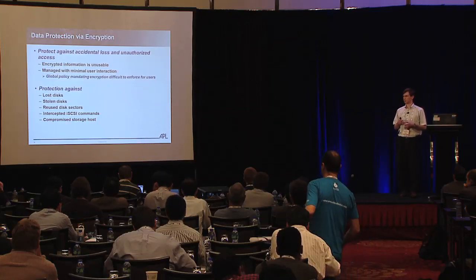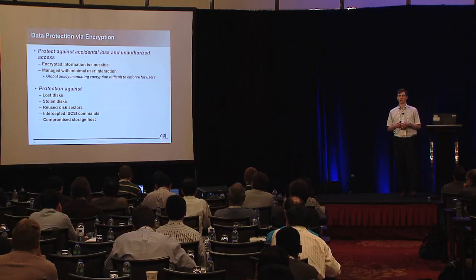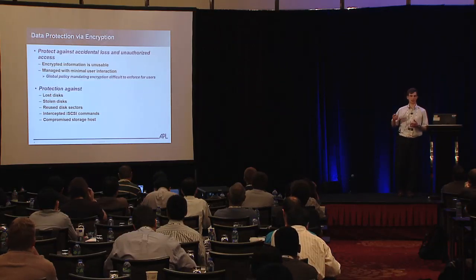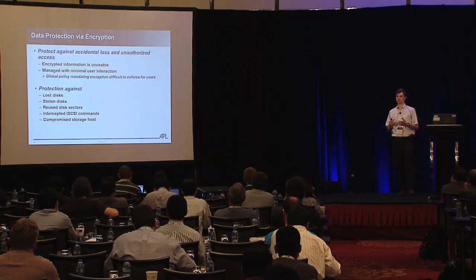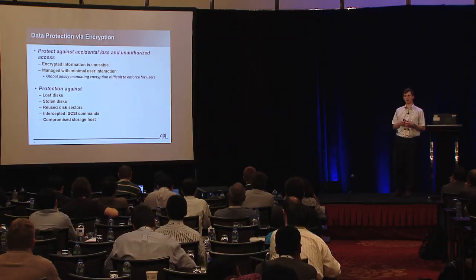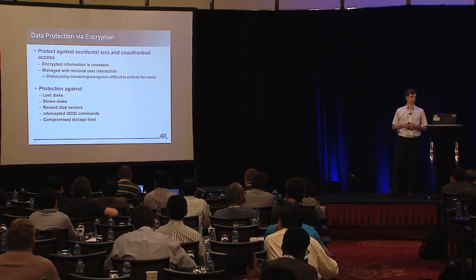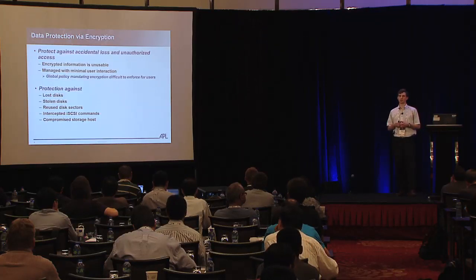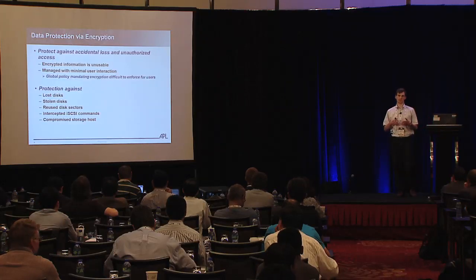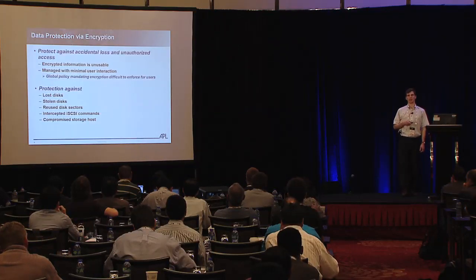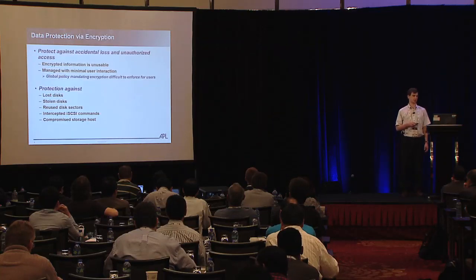The specific threats our work protects against are lost disks, stolen disks, and reused disk sectors — where you have a multi-tenant problem where allocated sectors are removed from one volume and then allocated to another tenant. If you don't first securely delete that data, there's potential for leakage across tenants. If iSCSI commands on the control network were intercepted, an attacker could rebuild the disk since those commands are not encrypted by default. We also protect against a compromised storage host or insider with direct access.